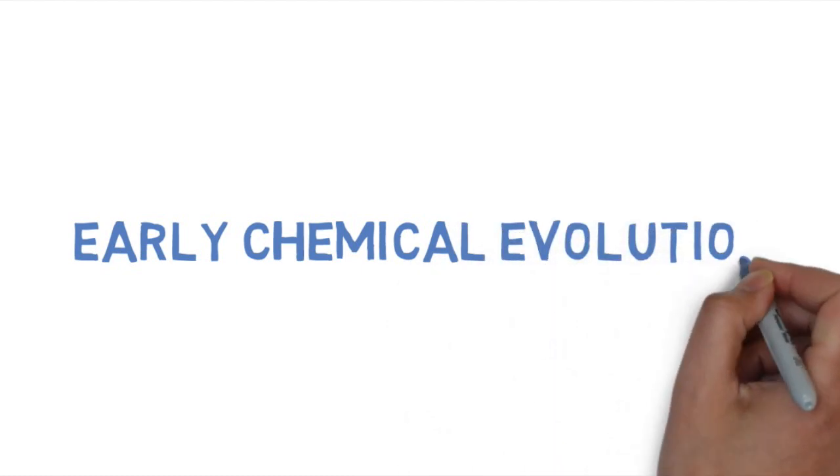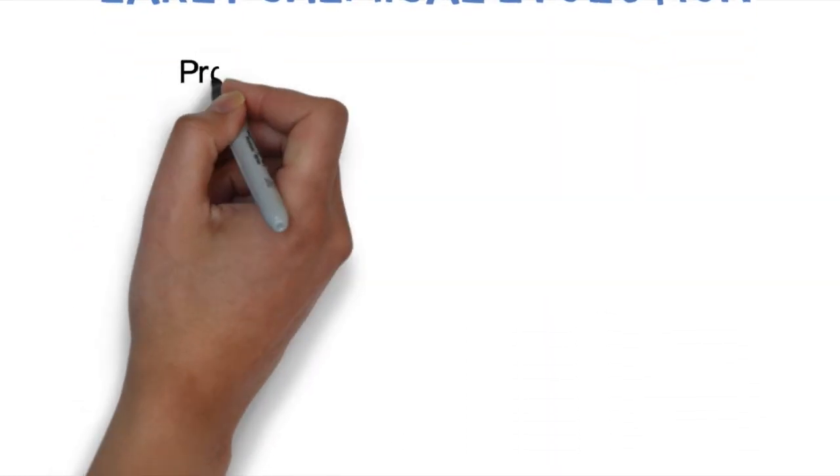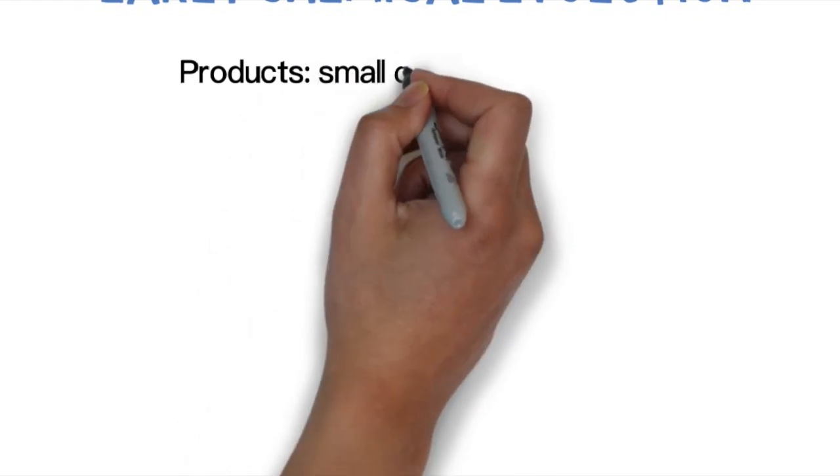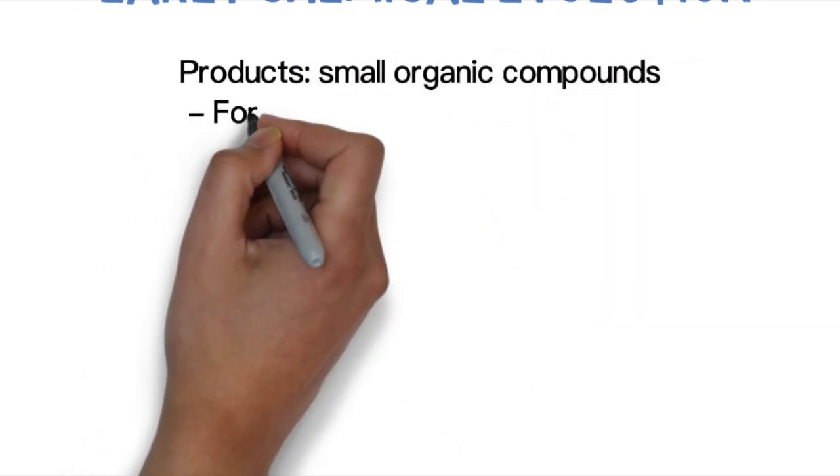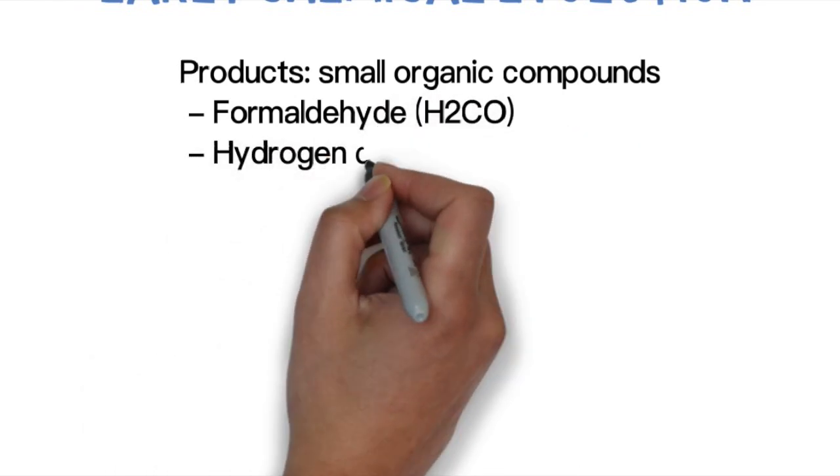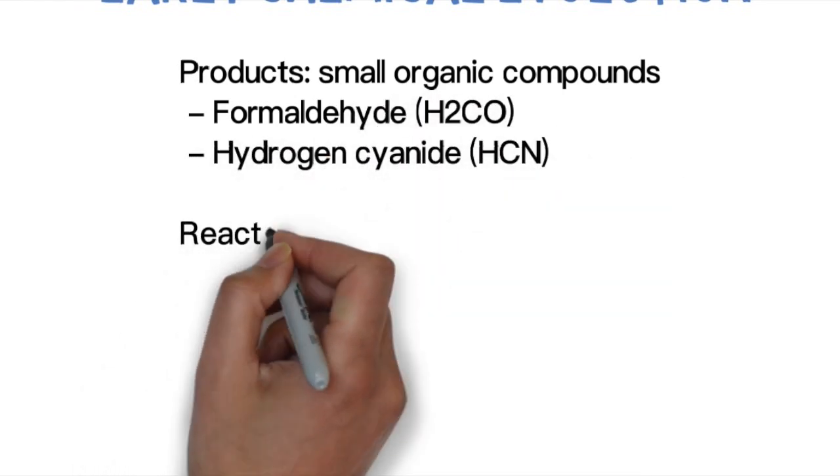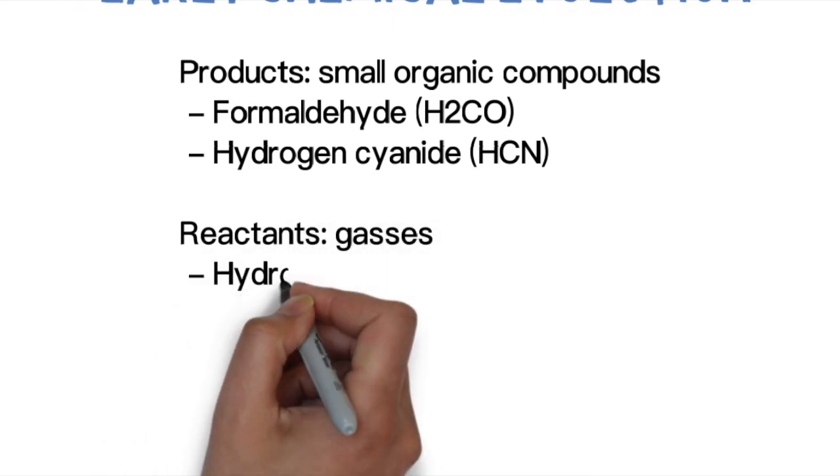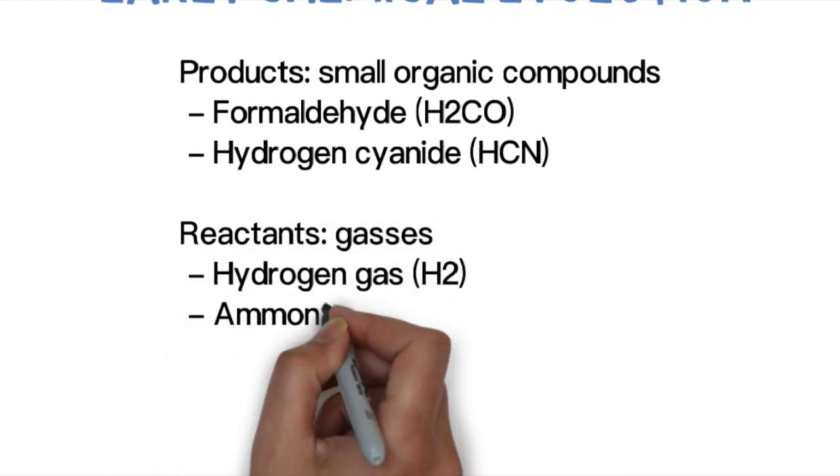Miller designed this experiment knowing these very important scientific facts: that early chemical evolution scientists believed that the main products were small organic molecules, meaning they contained carbon, such as formaldehyde and hydrogen cyanide.